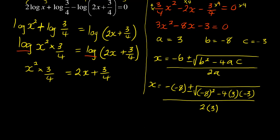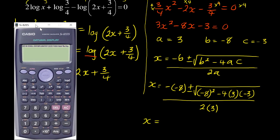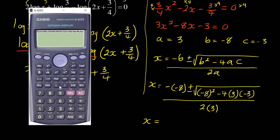Punching that into the calculator: negative b is negative 8 plus the square root of negative 8 squared minus 4ac, which is 3 times negative 3, all over 2a. The first value is x equals 3.